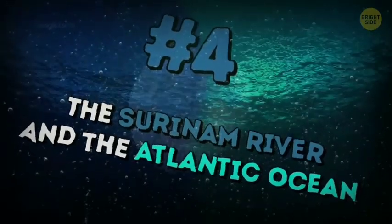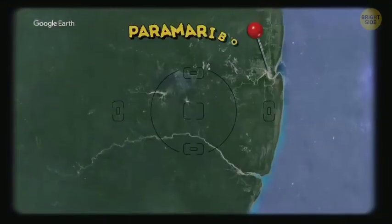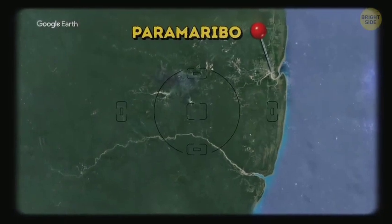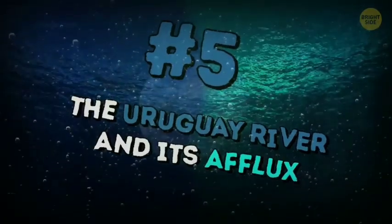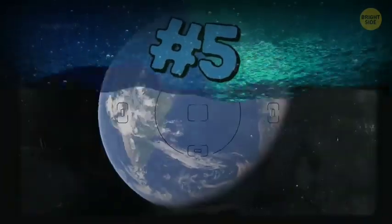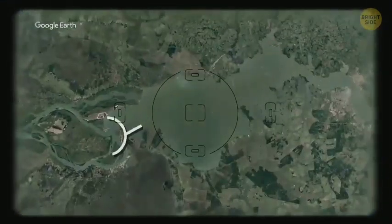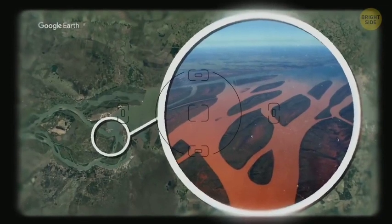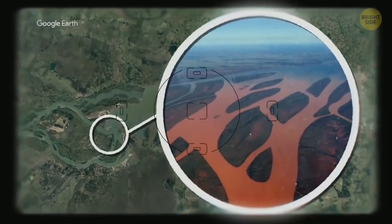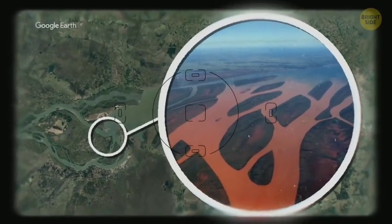The Suriname River and the Atlantic Ocean meet near Paramaribo in South America. The Uruguay River and its Aflux. These two meet in Misiones province in Argentina. One of them is clean to be used in agriculture, and the other gets almost red because of loam during rainy seasons.